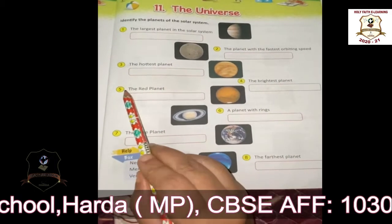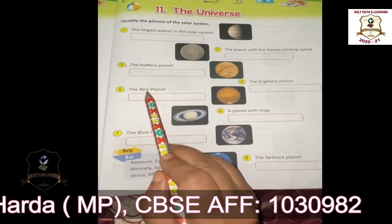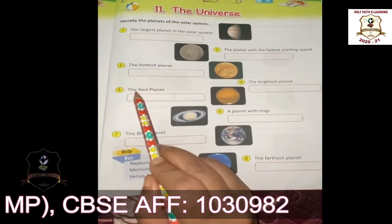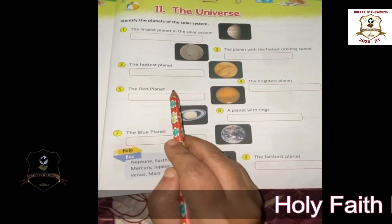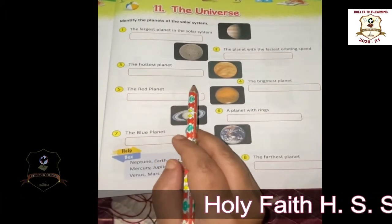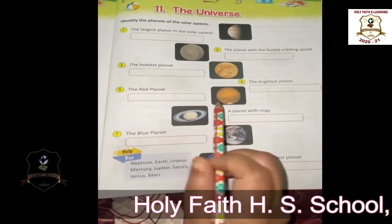Fifth: the red planet. Which planet is called the red planet? Mars is called the red planet.